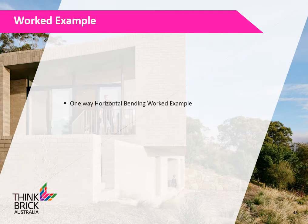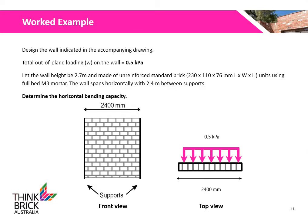We will now go through a worked example on how to determine the horizontal bending capacity of an unreinforced brick wall. This example requires us to design a wall with a total out-of-plane loading of 0.5 kPa. The wall is 2.7m high, made of standard brick units using full bedding of M3 mortar. The wall spans horizontally with 2.4m between supports. We will determine the horizontal bending capacity and check whether it is greater than the design loading.